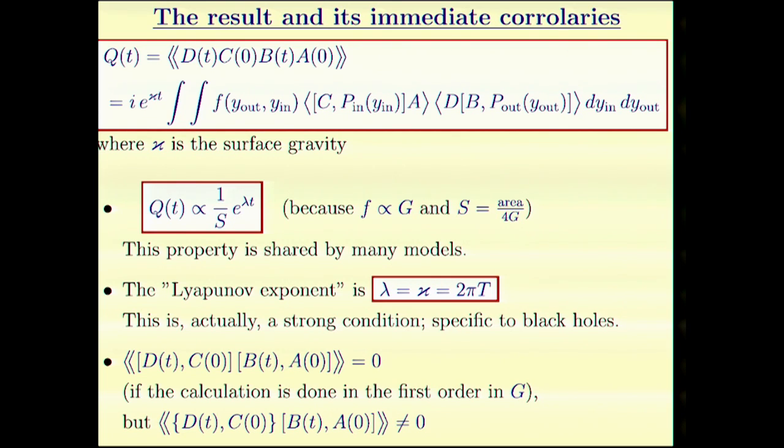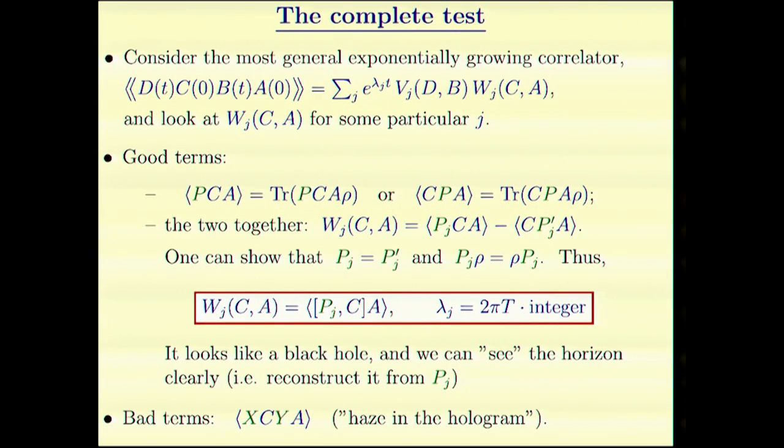Here is the explanation. If we just write down a general form of this correlator, this is the most general that can happen. There are some multiple Lyapunov exponents and some functions that are bilinear in operators.